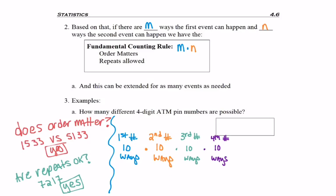The multiplication and the fundamental counting rule say that I can multiply that to get a thousand. So this means there are 1,000 different PIN numbers possible for my ATM card.